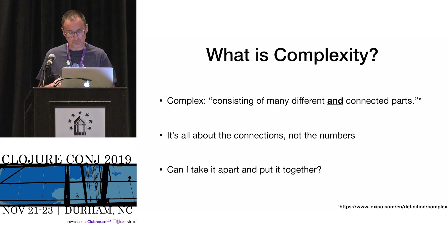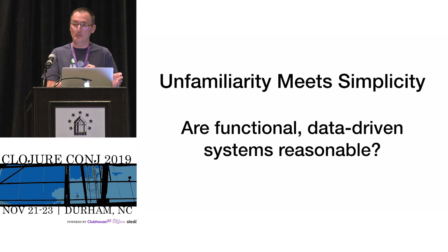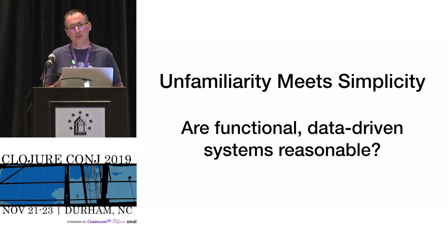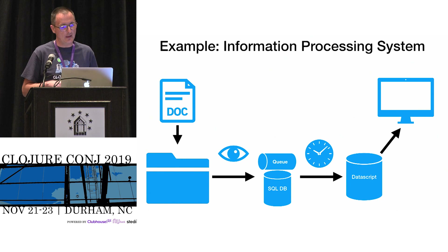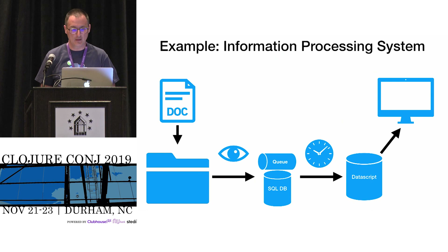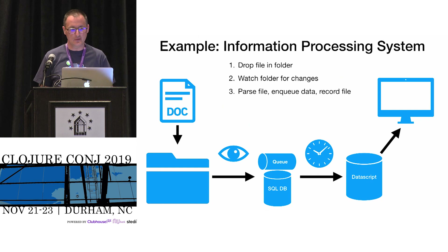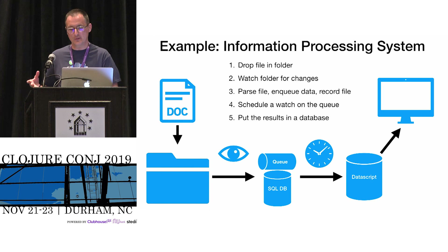I want to bring some familiarity to this concept in software development. We talk about the Lego example, then go to software, and very soon admit defeat saying the real world has mutable stateful things. So my question is: is it actually reasonable to build functional data-driven systems that are simple? Yes, of course. Here's a simple information processing system I made up for this talk — probably not dissimilar from things you've seen. It watches a folder, parses files, enqueues data into a durable queue, records processing into a SQL database, watches the queue for changes, and puts results into a database, with an API over all of this.